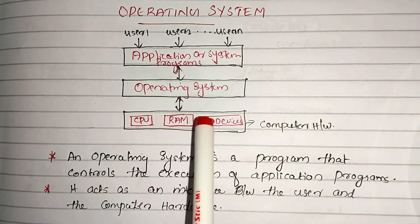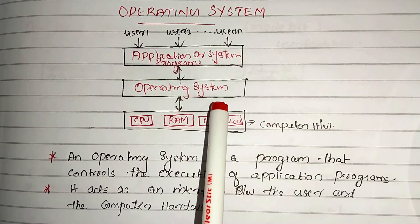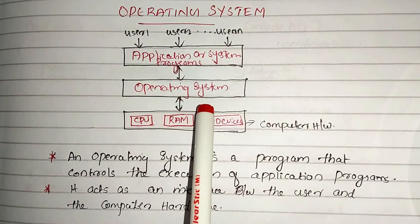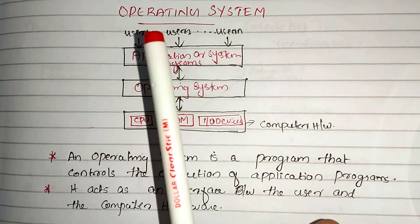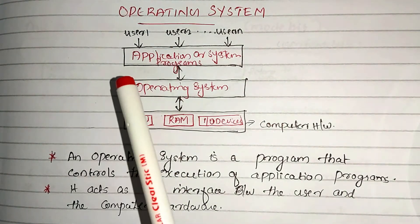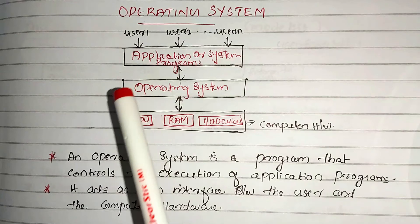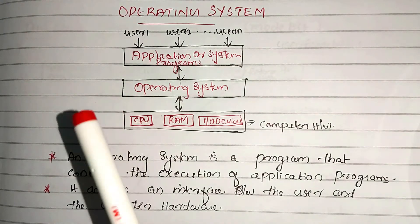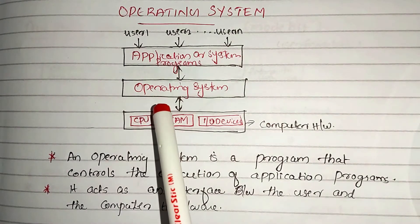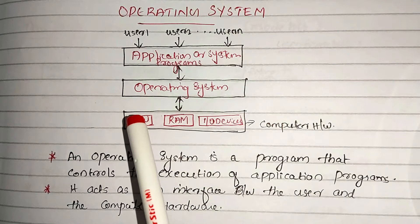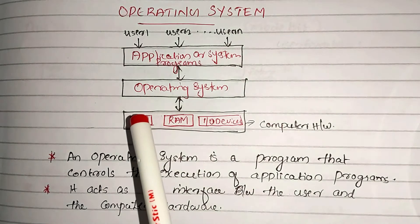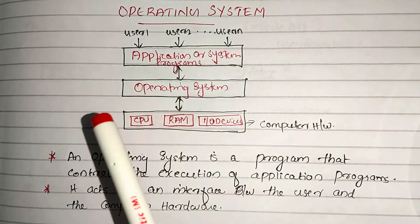The purpose of the operating system is that if a user runs any application program, the operating system will be able to control the application program, making the user efficient to perform their tasks.